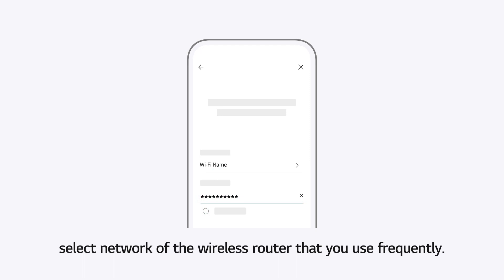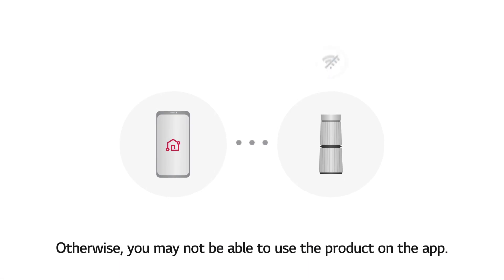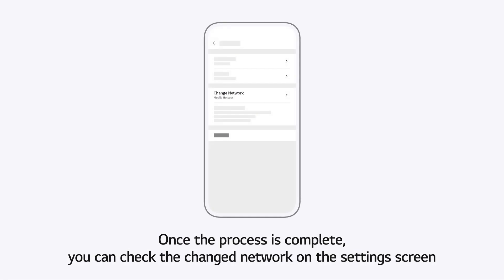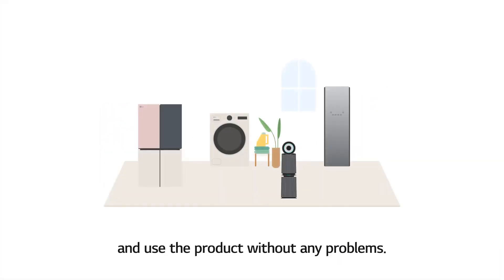When selecting a Wi-Fi network that your product will be connected to, select the network of the wireless router that you use frequently. Otherwise, you may not be able to use the product on the app. Once the process is complete, you can check the changed network on the Settings screen and use the product without any problems.